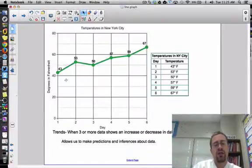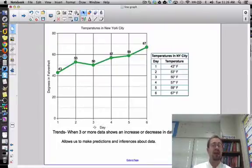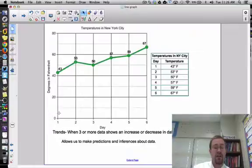And a line graph will always show change over time or a distance, change over time. And so when I look at this, I'm looking at the days, which is a typical time. Another one will be minutes, seconds, hours, and different times there. And then I have a change in data in the form of degrees in Fahrenheit. So we're looking at temperatures of New York City, and we see a change over the days.